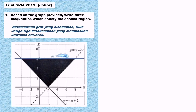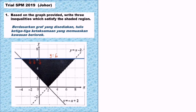For this first straight line, this is a horizontal line passing through the y-axis at 6. So the equation is y equals 6. To find the inequality, we need to refer to the shaded region. The shaded region is below y equals 6, so the first inequality is y less than or equal to 6.